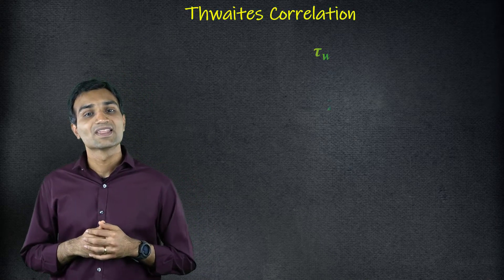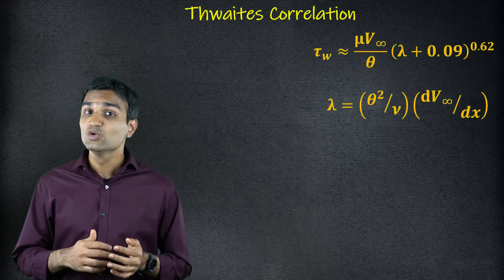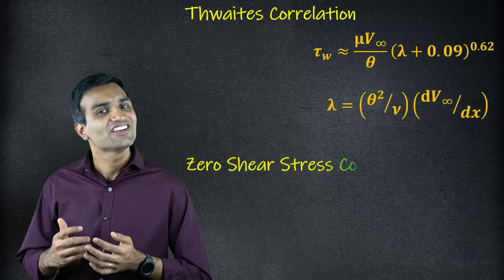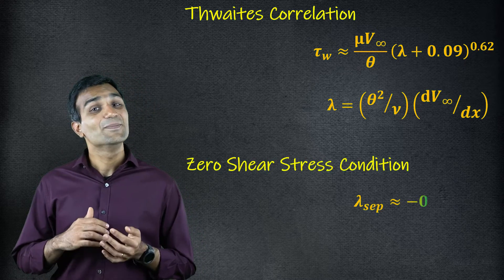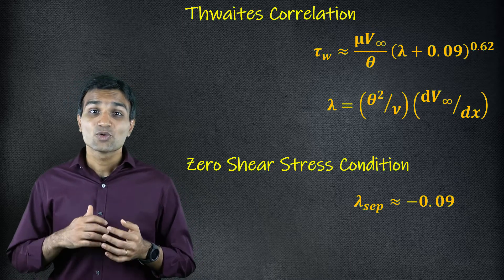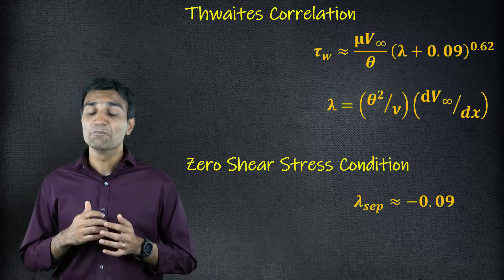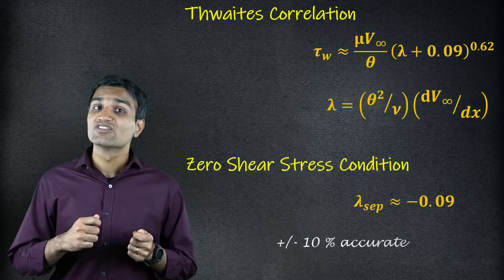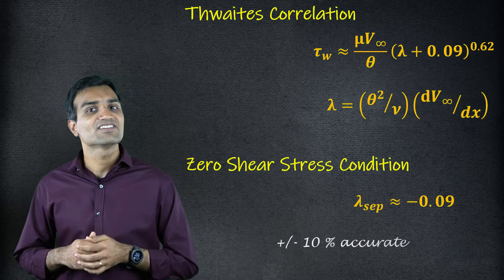In the case of laminar boundary layer flows, Dwight's correlation uses the zero shear stress criterion to estimate the separation point. Based on his correlation, Dwight's was able to calculate the momentum boundary layer thickness and the skin friction was within plus or minus 10% accurate.